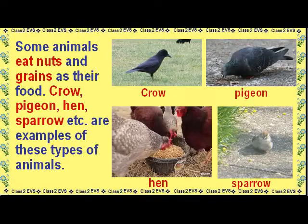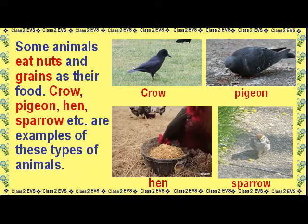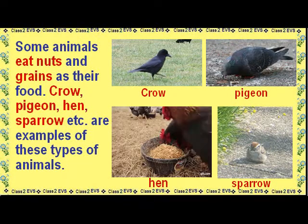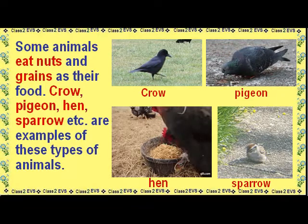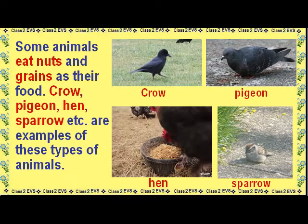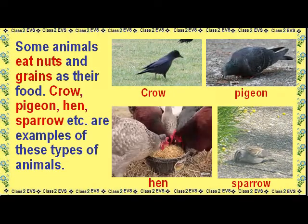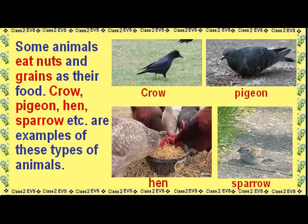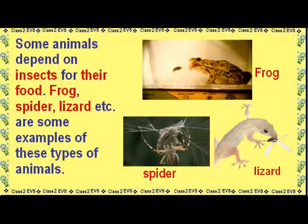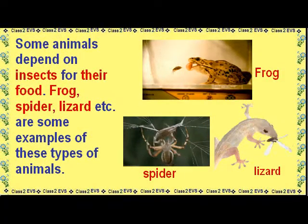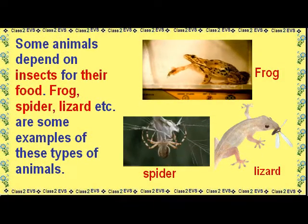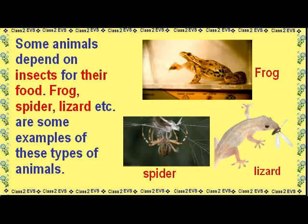Some animals eat nuts and grains as their food. Crow, pigeon, hen, sparrow, etc. are examples of these types of animals. Some animals depend on insects for their food. Frog, spider, lizard, etc. are some examples of these types of animals.